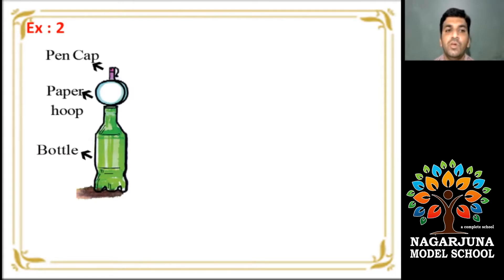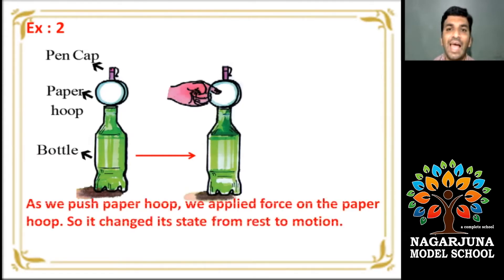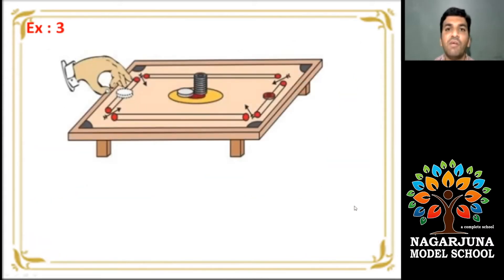There is one more example. Make a circular strip from a thick paper and balance the hoop on the center of the mouth of the bottle. Now a pen cap is placed on the paper hoop. Give a sharp push with your fingers as fast as you can. We observe the pen cap suddenly falls into the bottle. When we push paper hoop, we apply force on the paper hoop. So, change its state from rest to motion. Due to gravitational force, the pen cap falls into the bottle.